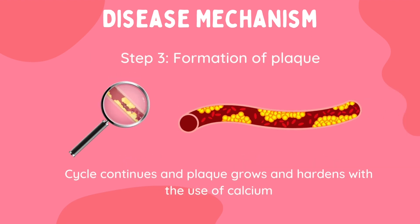The process of forming more dead foam cells will continue and other debris will keep building at the site of the fatty streak, causing it to become a large piece of plaque. The arteries' smooth muscle cells will form a layer on top of the plaque called a fibrous cap, which covers the plaque and prevents it from breaking off into the bloodstream. The plaque continues to grow and can use calcium to harden, with growth occurring outward and restricting blood flow even more.